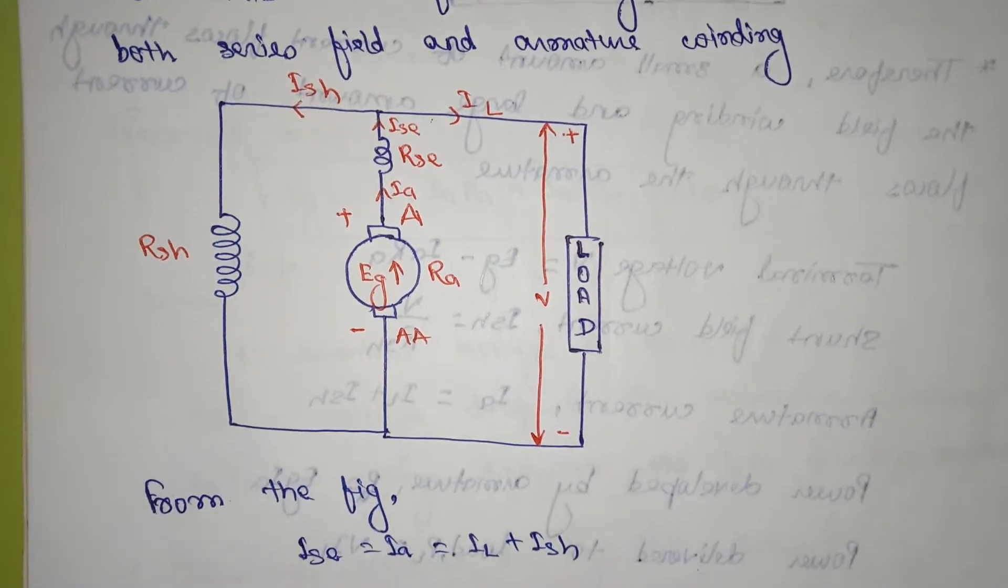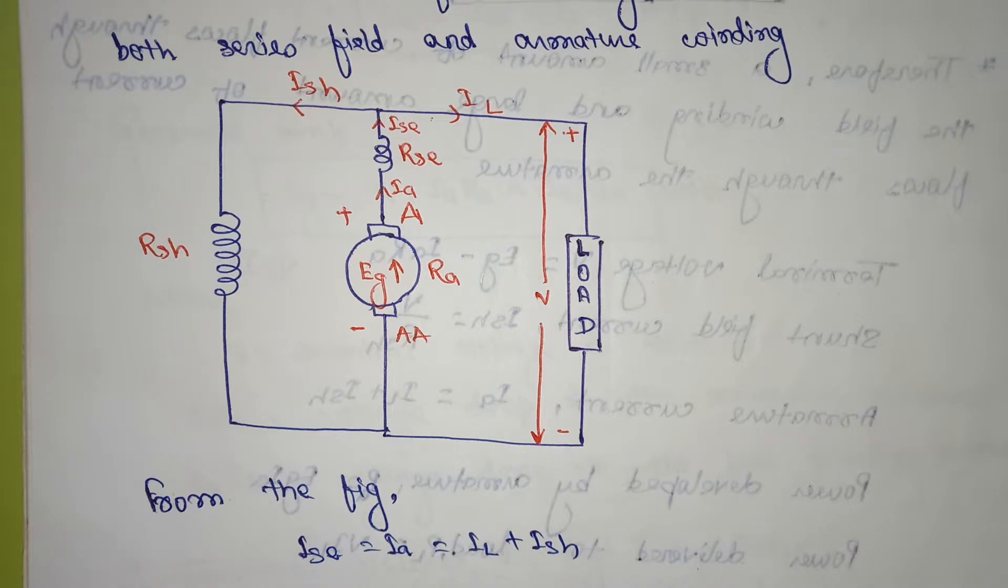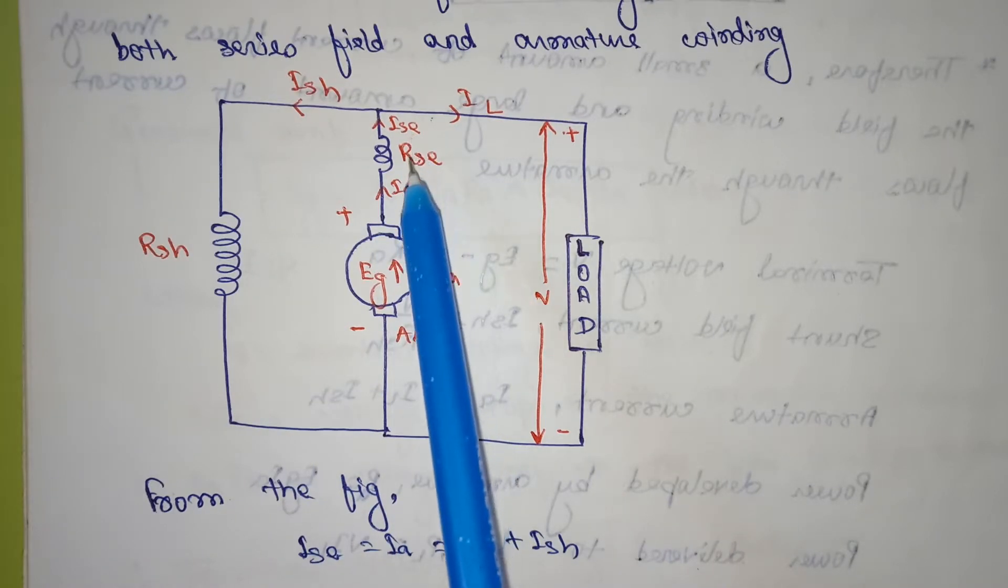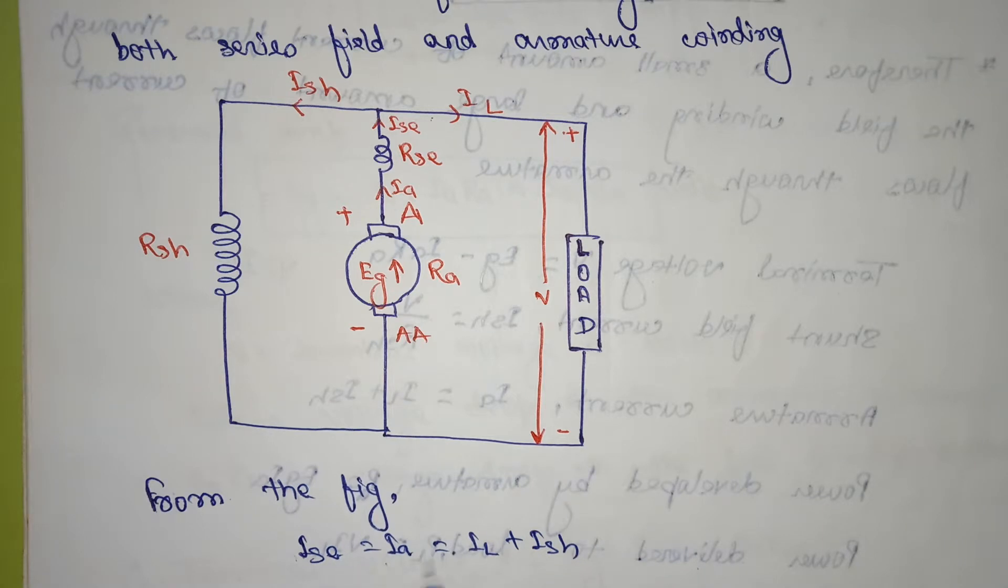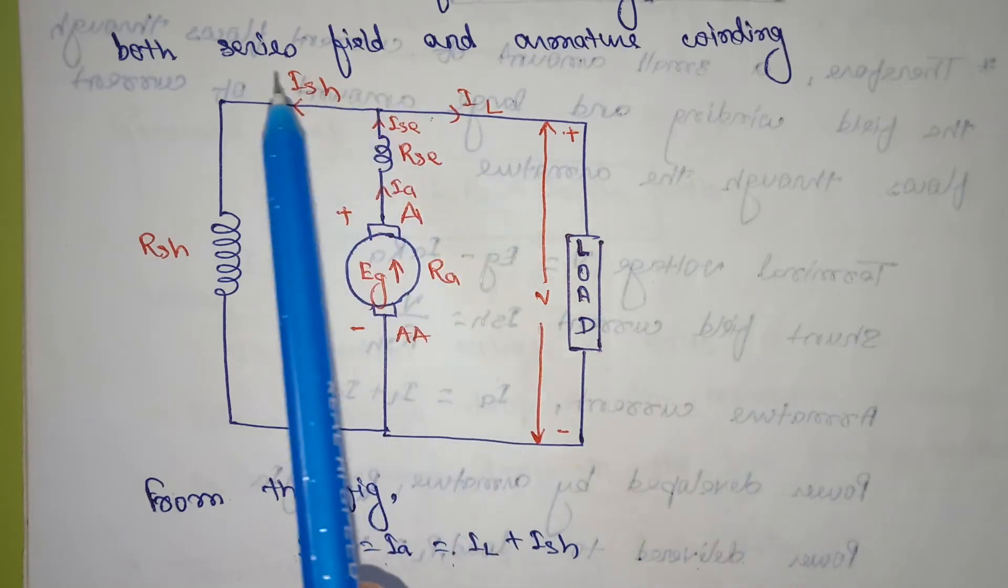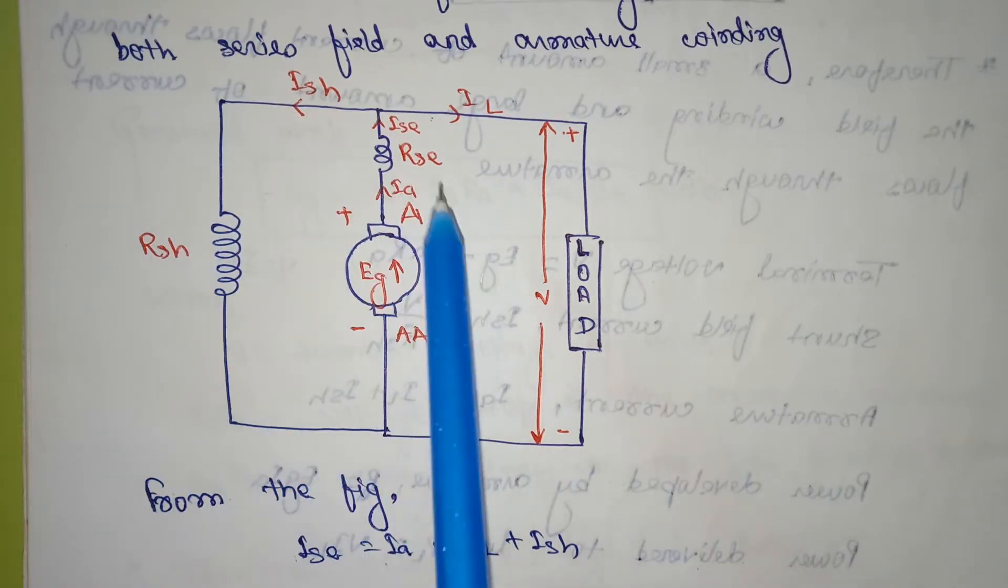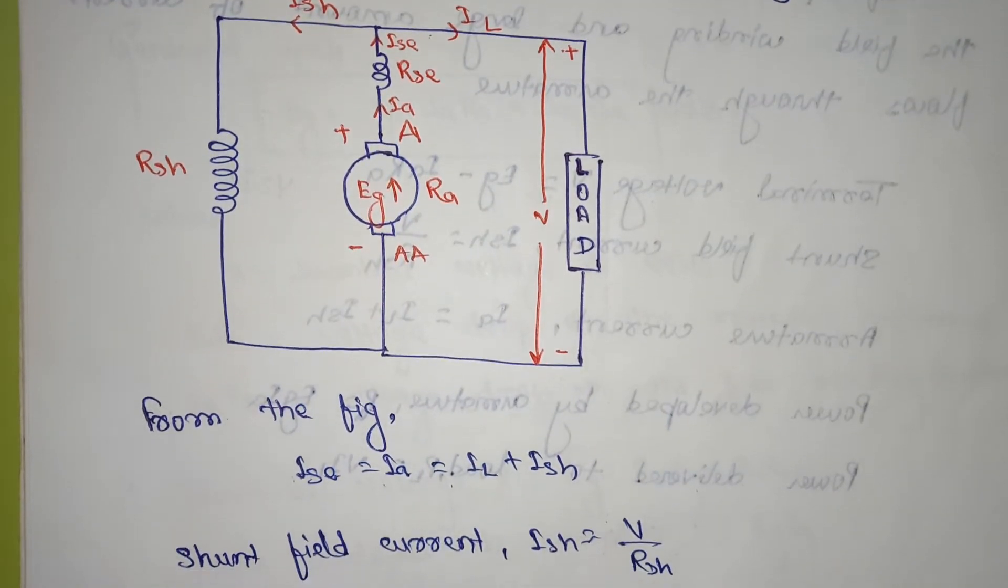Ise is equal to Ia is equal to IL plus Ish. From the direction of current we can find out that Ia is equal to IL plus Ish. We have to find out the Ish, this current.